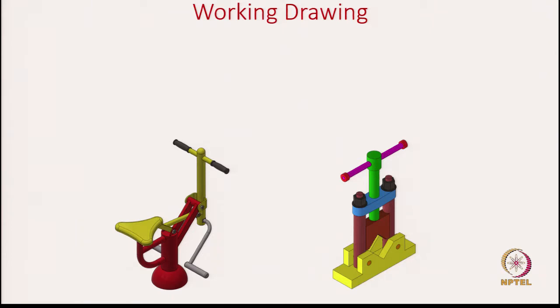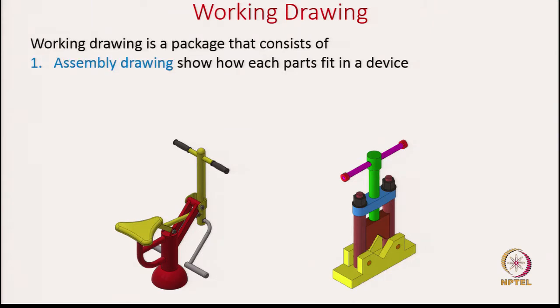Essentially, what is a working drawing? It is a package that consists of a few drawings. The first thing you will give them is the assembly drawing. An assembly drawing shows each part and how it fits in a device. If you notice any of these devices, you will see that it has multiple parts — maybe close to 7, 8, or 10 parts — all coming together so they fit and you see the actual device.